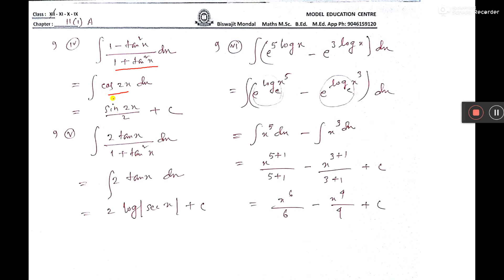Now, integration of cos 2x is sin 2x. And with x, 2 is there, so you have to divide by these 2. And where c is integrating constant, you have to write.